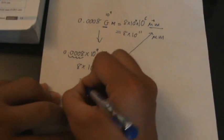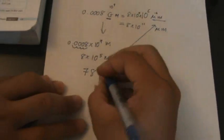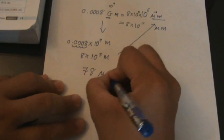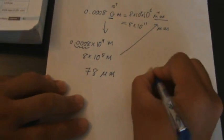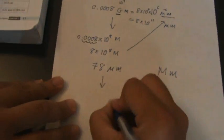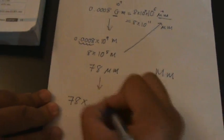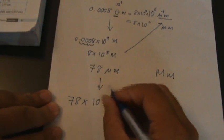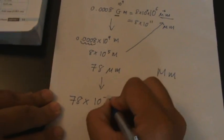Okay, then another example is 78 micrometer. I want to change to megameter. Okay, maybe you answer me verbally. How much is micro? 10 power of negative 6.